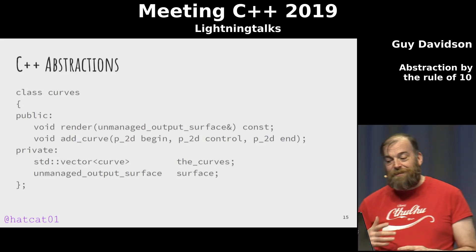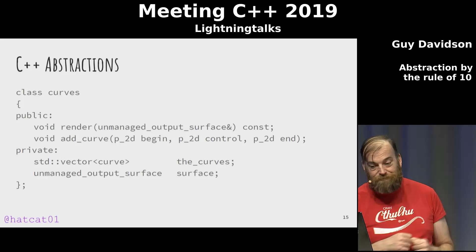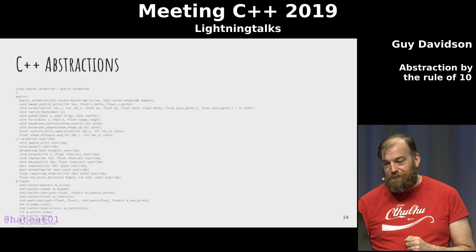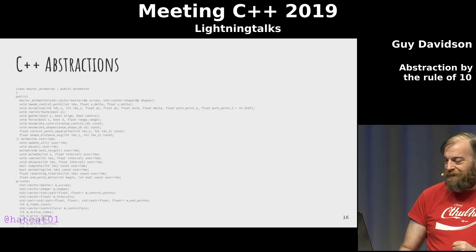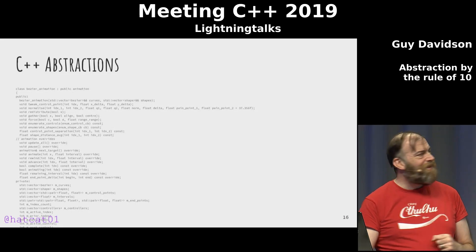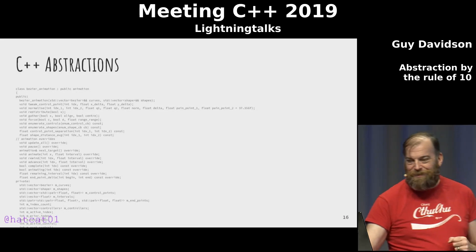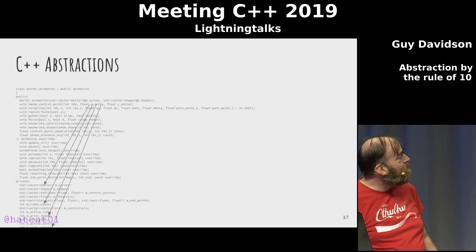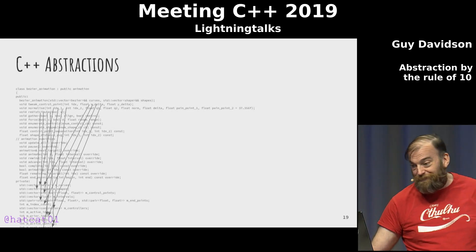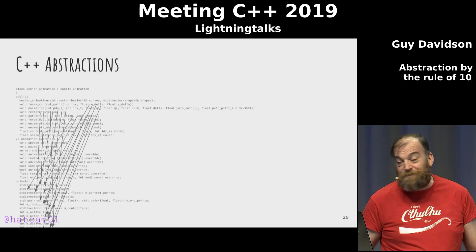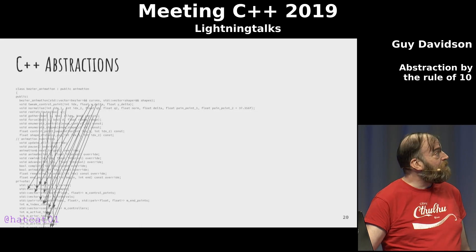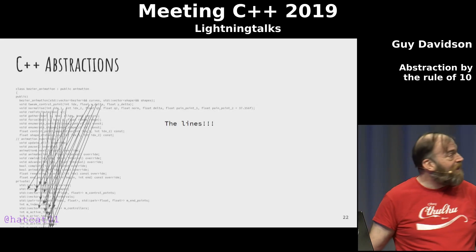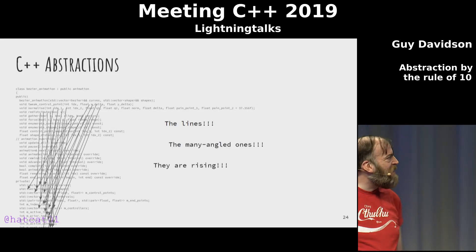Or we can group bits of interacting state together and form our next abstraction: the class. All the data that interacts together can live in the private interface, and all the code that schedules that interaction can go in the public interface. Of course, a class can get large — look at this interface. This function interacts with these member data, this function interacts with these member data, and so on. The interaction lines become numerous and tangled.